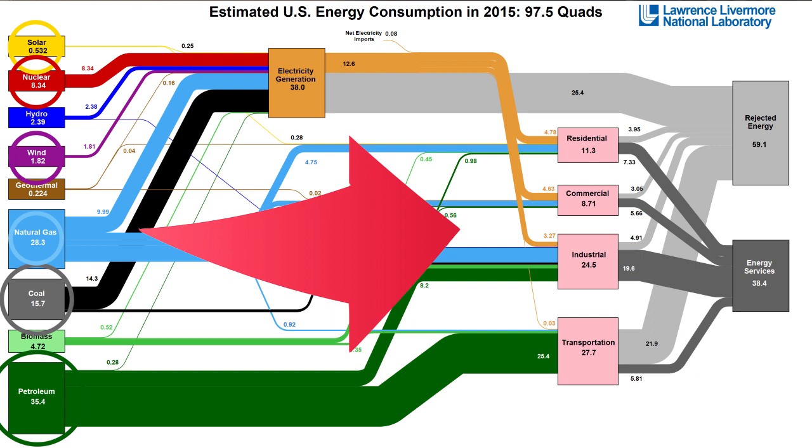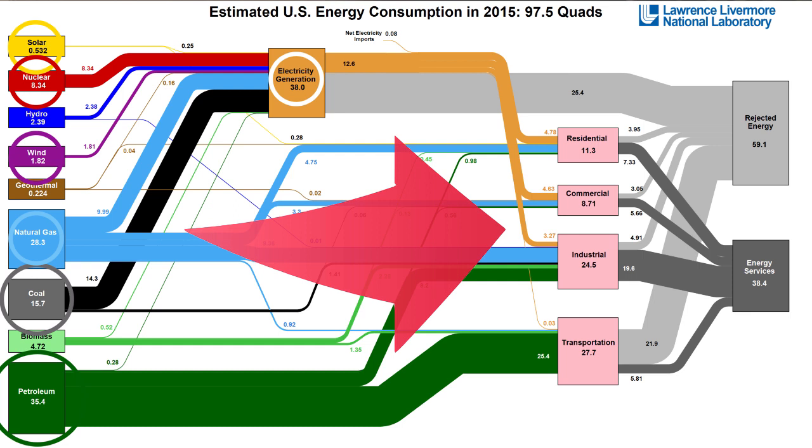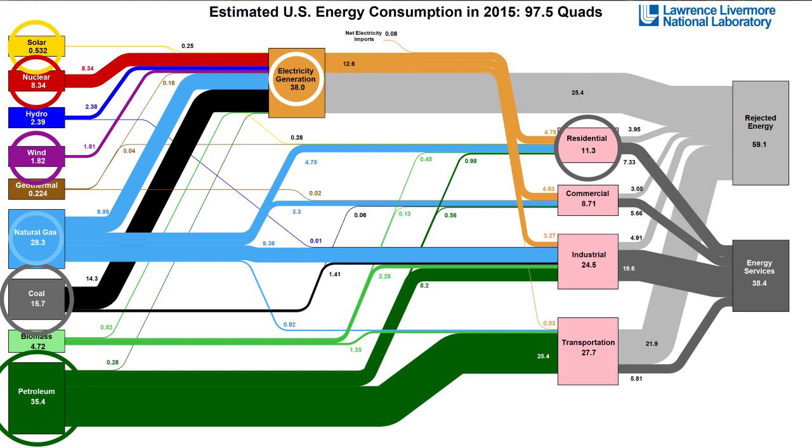As you can see, we use lots of different kinds of energy to create electricity, and then that electricity is combined again with those other resources to power our homes, our businesses, our cars and trucks. Finally, the chart depicts how much energy is put to good use in those areas and how much of the energy passes through as rejected energy to the environment.